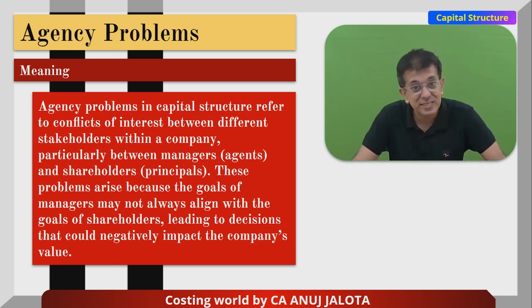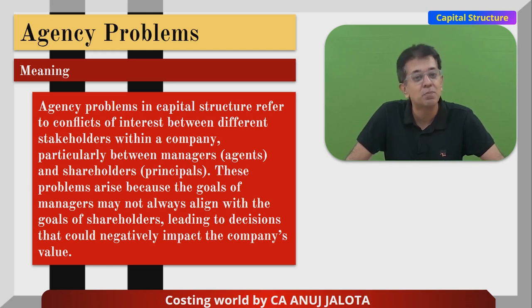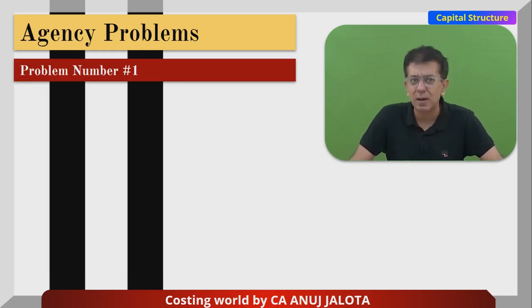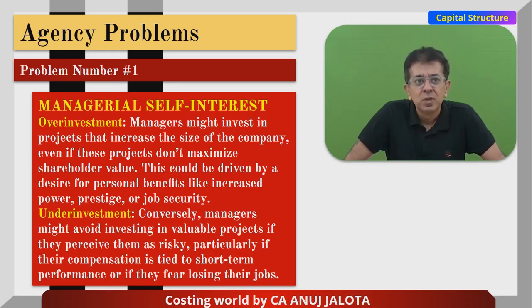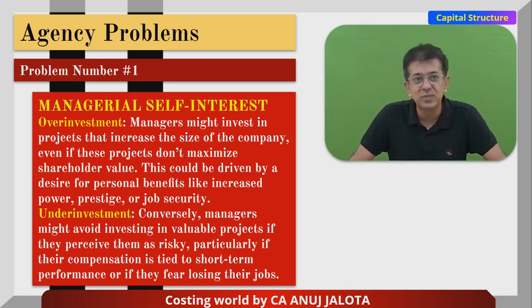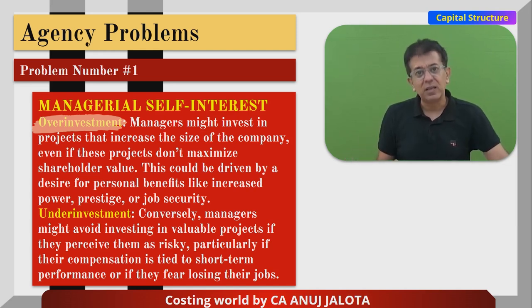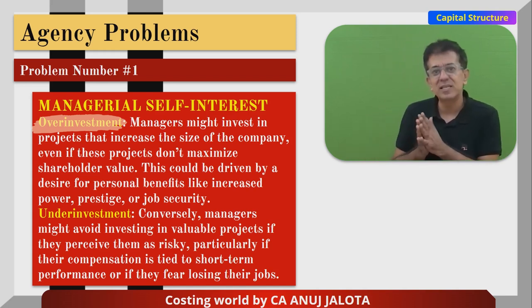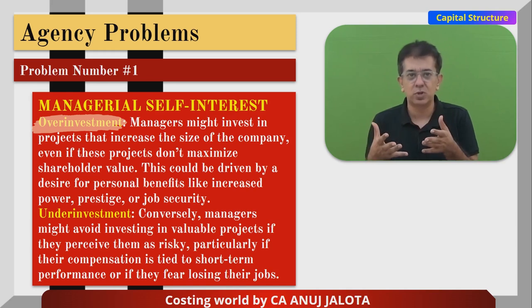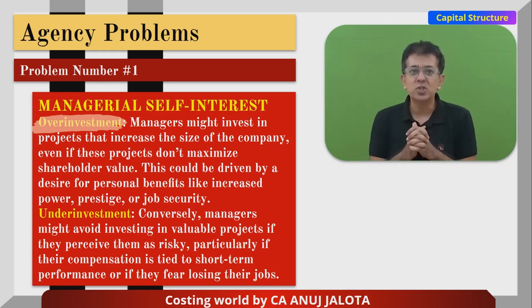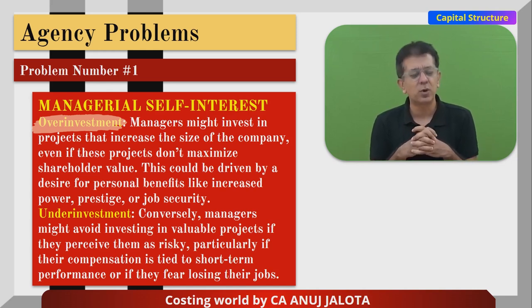Sometimes managers can take decisions which are good for them but bad for the company and shareholders. Example one: manager self-interest. The first problem is overinvestment — managers might invest and undertake a lot of businesses and start to overinvest in multiple projects. Managers might invest in projects that increase the size of the company even if these projects do not maximize shareholders' value.